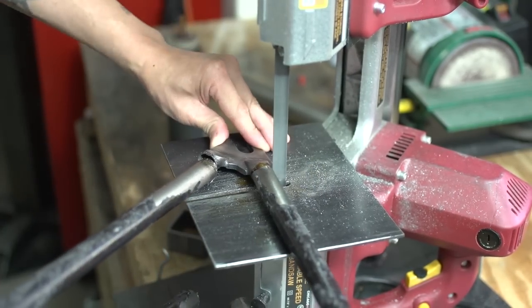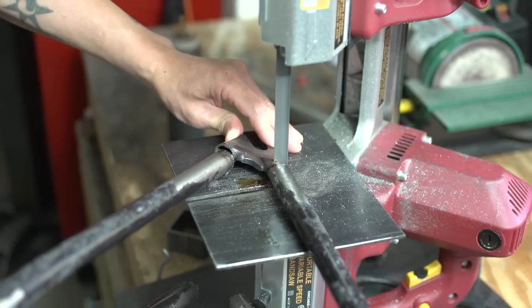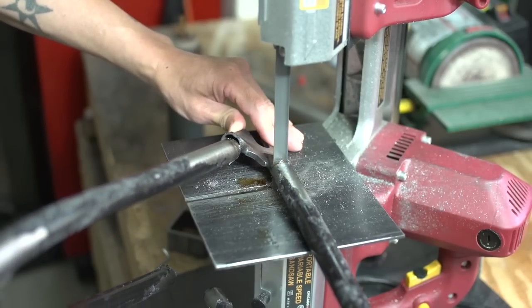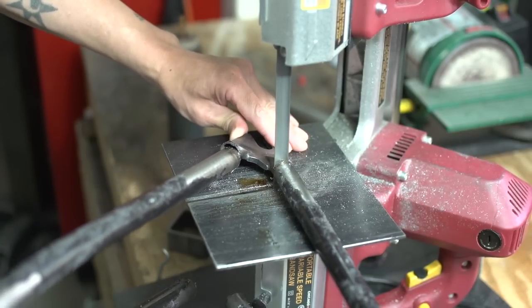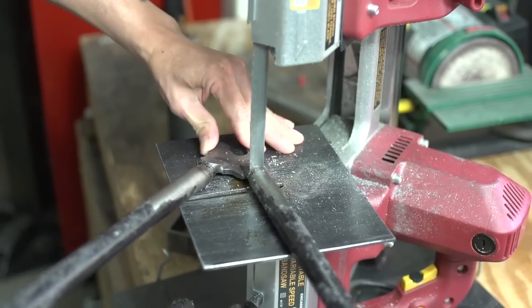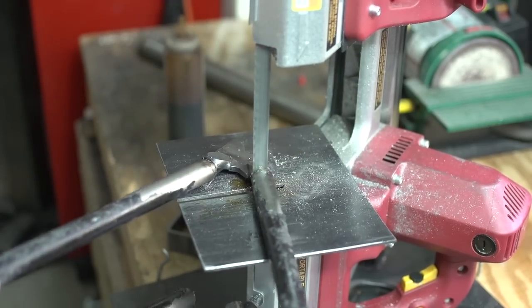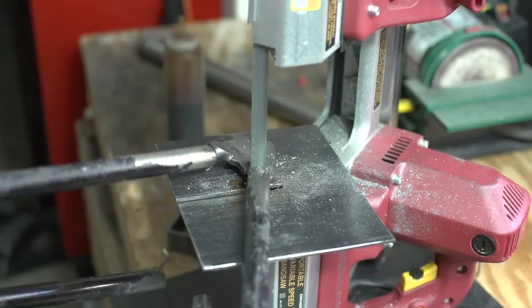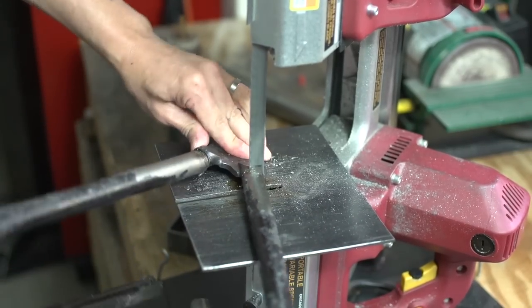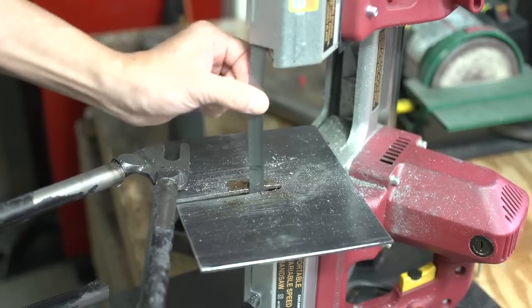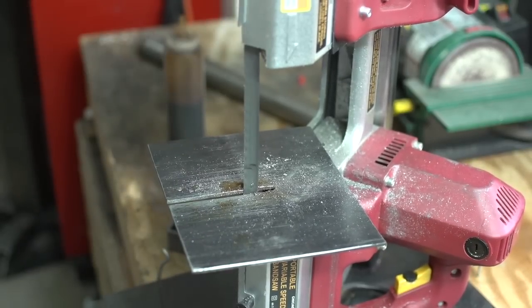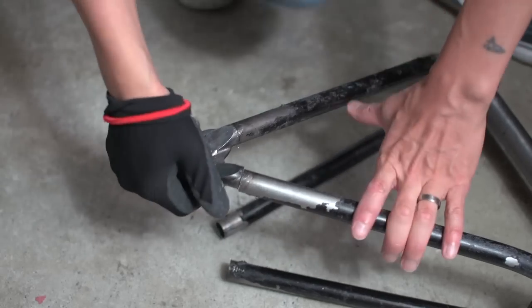I had the video sped up but I slowed it down for this little part here because I wanted to show you guys that if you're cutting something that's not laying flat on the table it always has a tendency to pinch the blade. And in this case it pinched the blade and I thought I broke the blade but it didn't break. It just came off the track inside the saw.